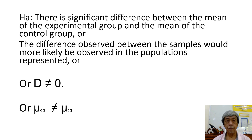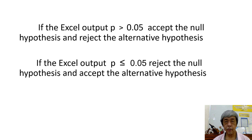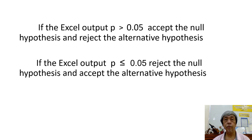The alternative hypothesis is that the population means are not equal. If the Excel output P is greater than 0.05, accept the null hypothesis and reject the alternative hypothesis. If the Excel output P is less than or equal to 0.05, reject the null hypothesis and accept the alternative hypothesis.